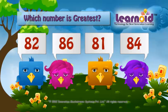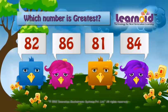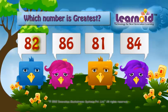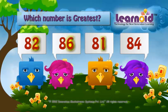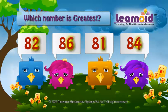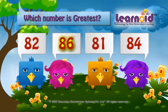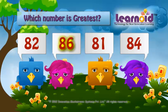So now we see the second digit in all the numbers. In 82, it is 2. In 86, it is 6. In 81, it is 1. And in 84, it is 4. So 86 will be the greatest number among all 4 numbers.